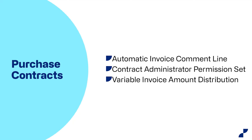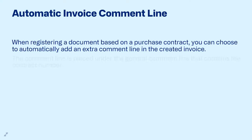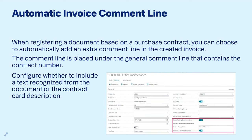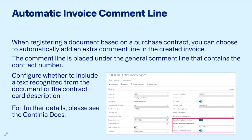Let's switch to the purchase contract area. We have an automatic invoice comment line. When you register an invoice linked to a purchase contract, you get a general comment line containing the contract number. But now you can add another comment line which includes either the invoice's recognized posting description or the contract description. Simply go to the purchase contract, set up the highlighted area in the bottom right corner to create a posting description, and choose whether to use the posting description from the recognized document or from the contract.